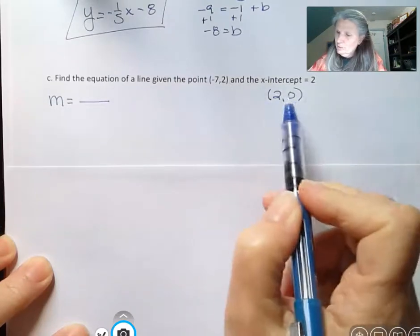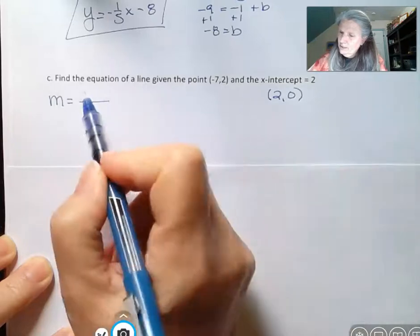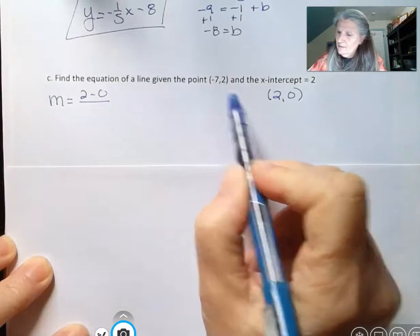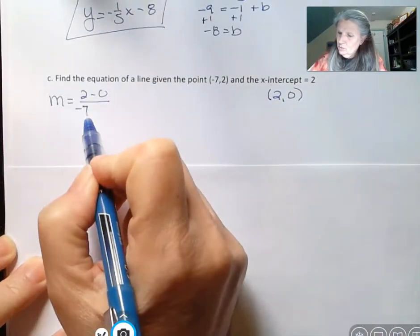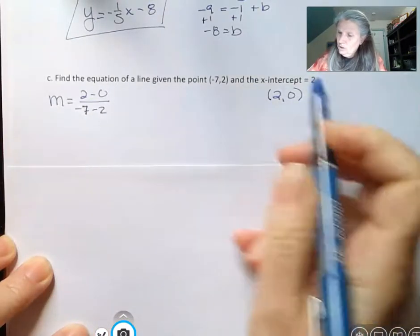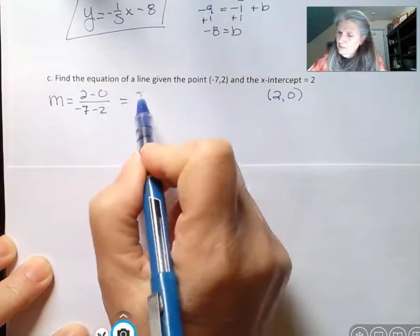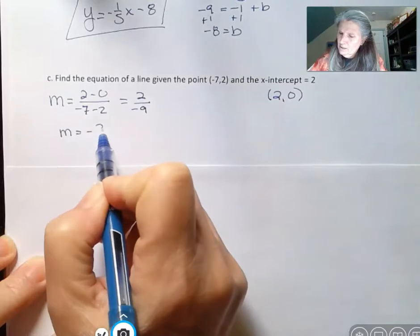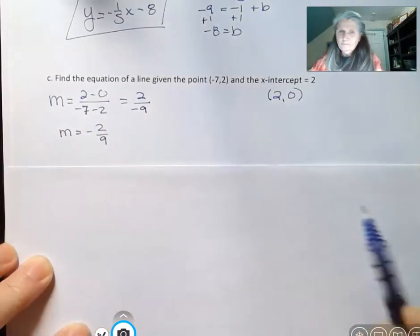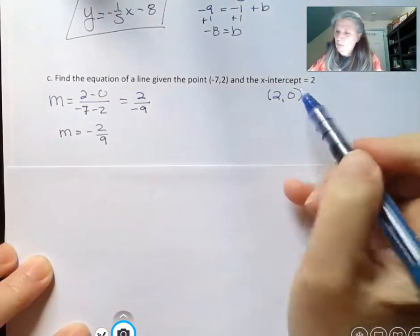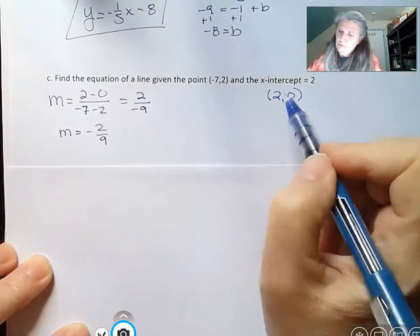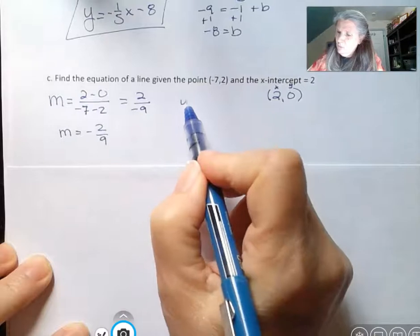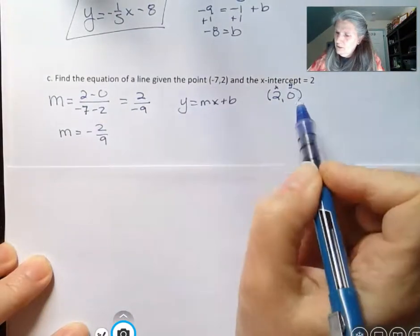So I'm going to subtract my y's on the top. Let's say 2 minus 0, those are my y's, and then negative 7 minus 2 is what's going to go on the bottom. And that's going to give me 2 over negative 9. So my slope is negative 2 ninths. And then I can pick either one of these points. Why not pick the x-intercept where something is 0? That seems the easiest. So here's my x and my y. y equals mx plus b.